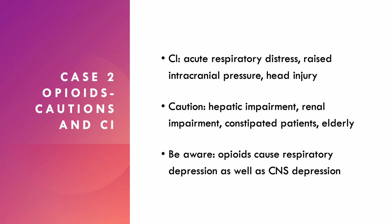This is important to bear in mind — it would be easy to accidentally prescribe too much. Cautions and contraindications for opioids: contraindications include acute respiratory distress, raised intracranial pressure, and head injury, because opioids cause respiratory depression and can worsen raised intracranial pressure and head injuries. Be careful in liver impairment, kidney impairment, constipated patients, and the elderly. In the elderly, it's probably better to reduce the dose as opioids have a bigger effect. In overdose, the antidote is naloxone.